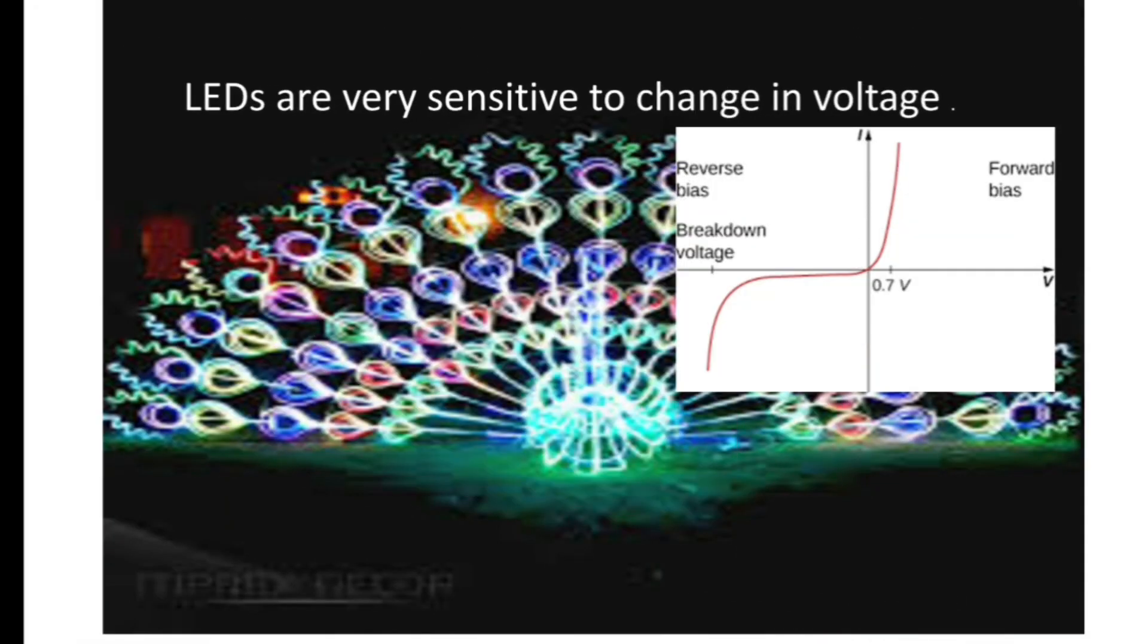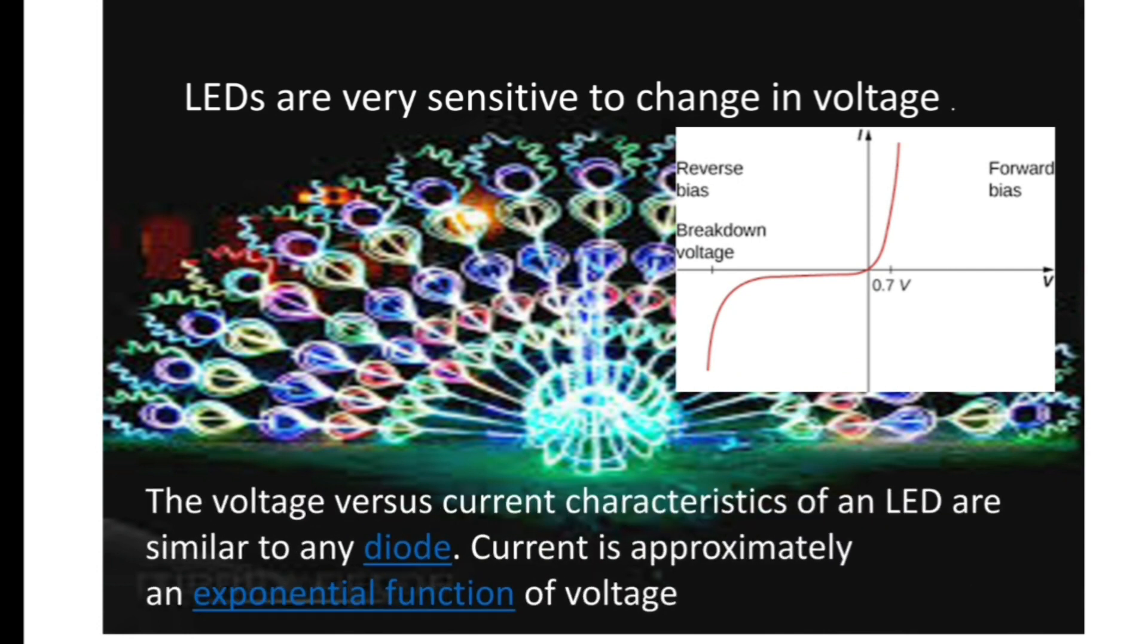LEDs are very sensitive to change in voltage. The voltage versus current characteristics of an LED are similar to any diode. Current is approximately an exponential function of voltage. You can see in this graph that at 0.7 volt, how the current has shot up. This is called exponential increase in current.